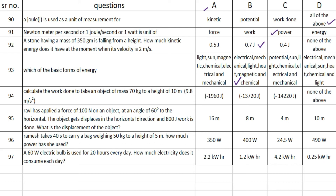The next one: calculate the work done to take an object of mass 70 kg to a height of 10 meters — the correct answer is option B — minus 13,720 joule. The next: Ravi has applied a force of 100 N on an object at an angle of 60 degrees to the horizontal. The object is displaced in the horizontal direction and 800 joule of work is done. What is the displacement of the object?